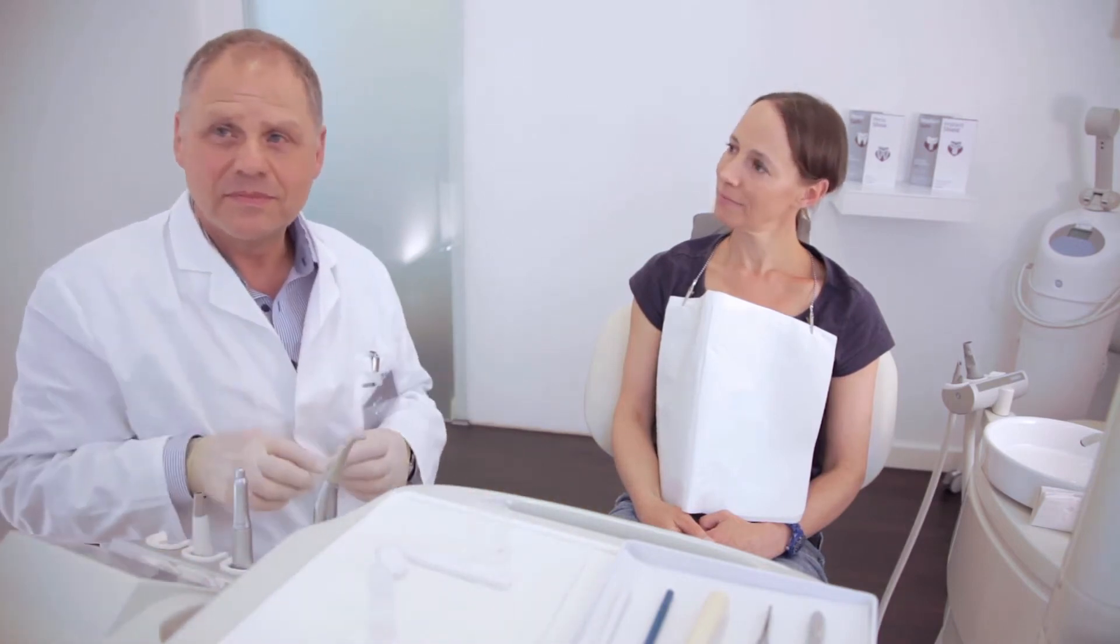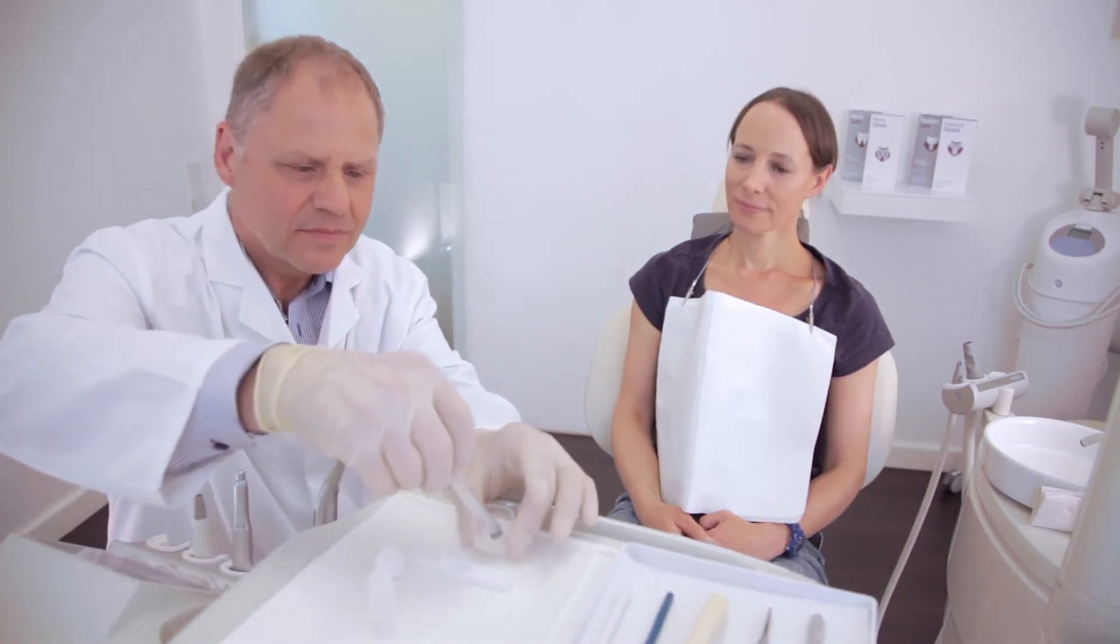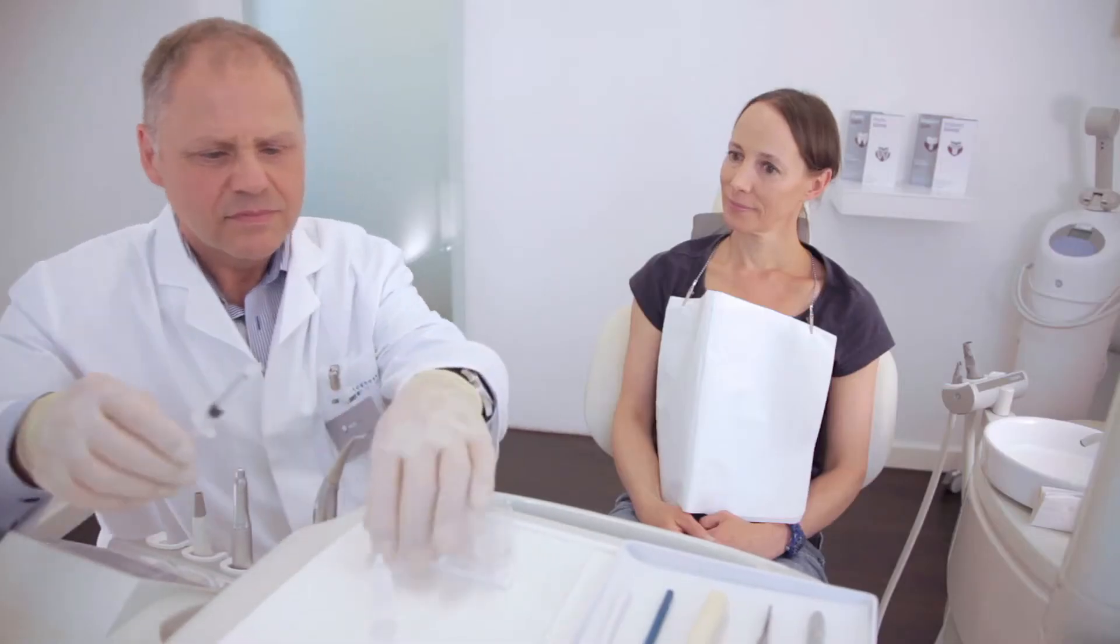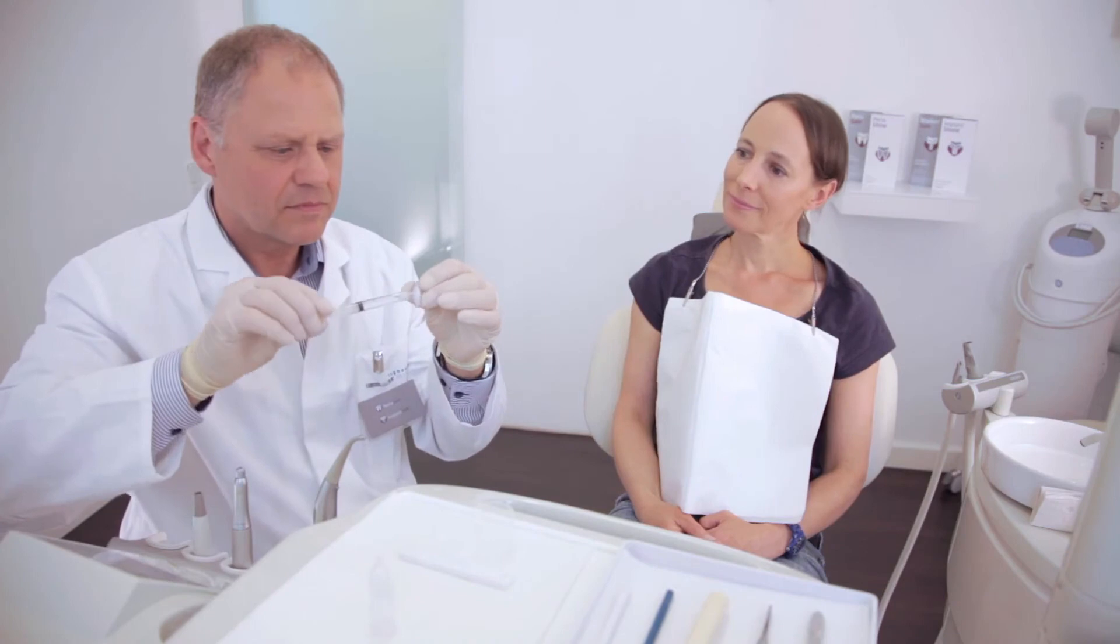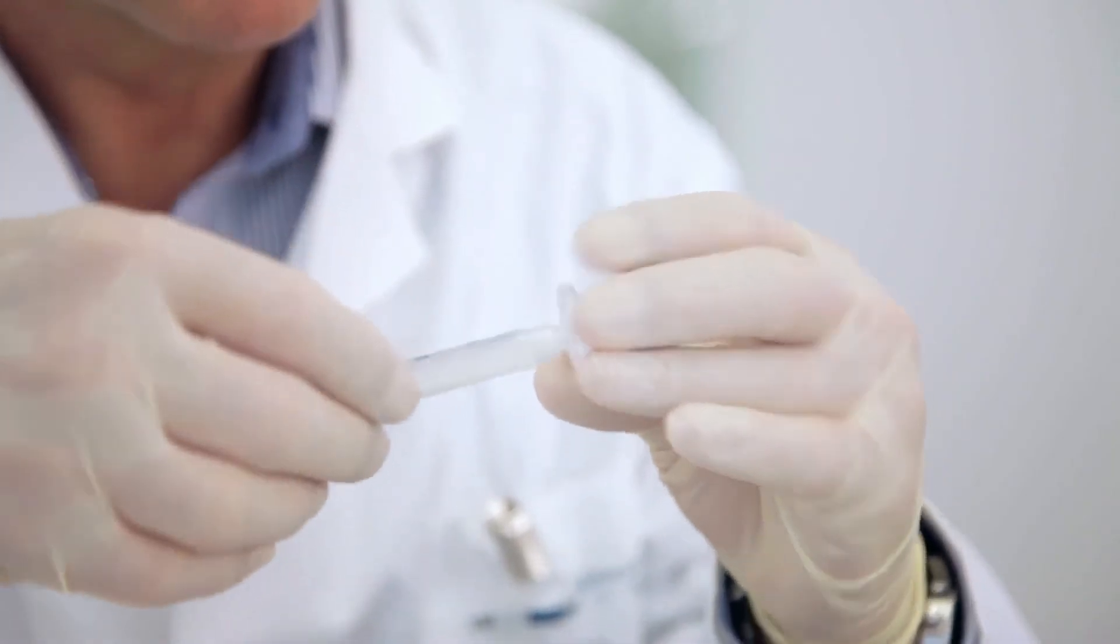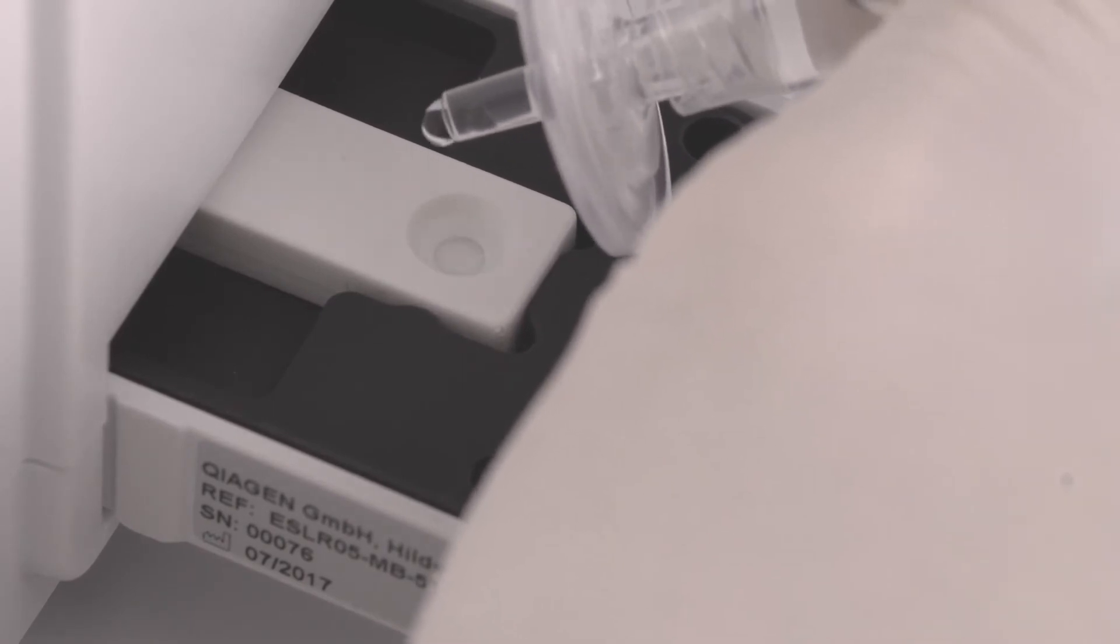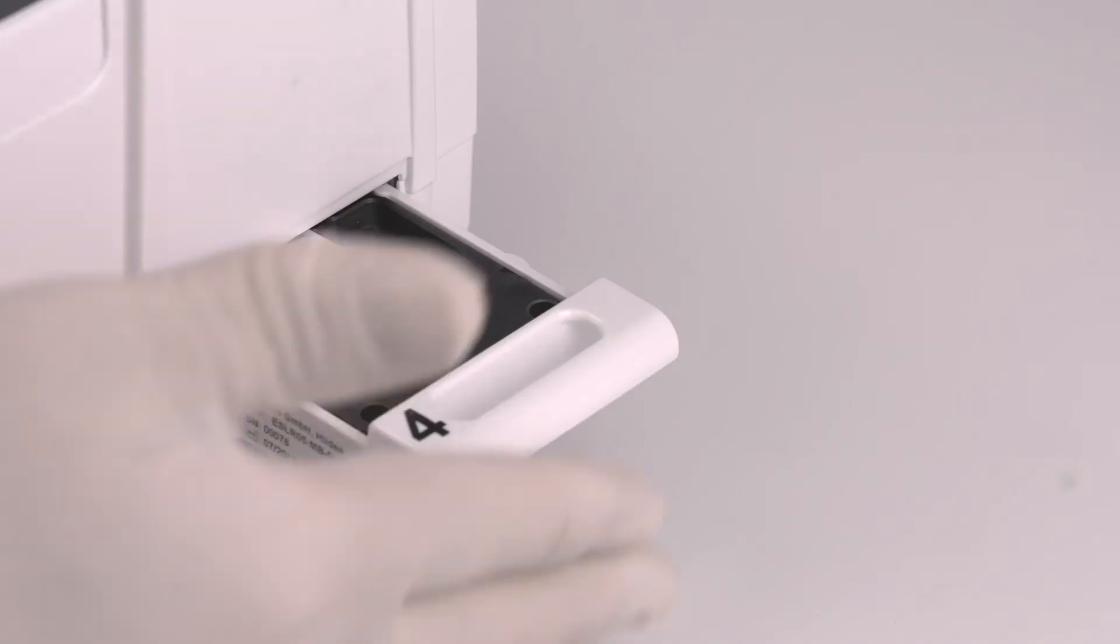Now suck up the patient's saliva sample from the cup with the syringe provided. Then attach the provided filter to the syringe by twisting in the clockwise direction. Then allow 3 to 4 drops to fall directly into the round opening of the test cassette, taking care not to stick the tip directly into the opening.